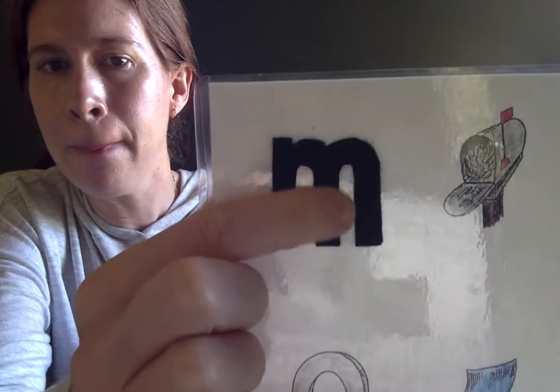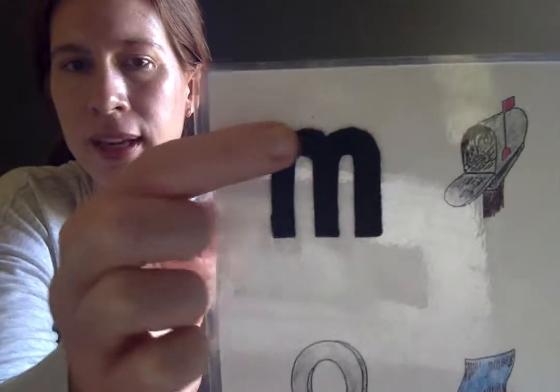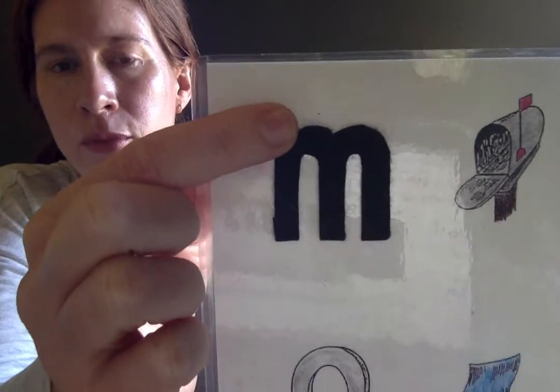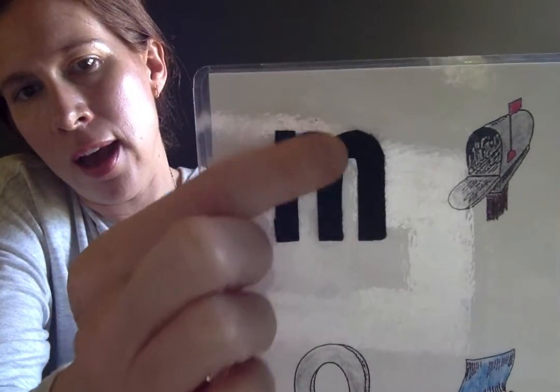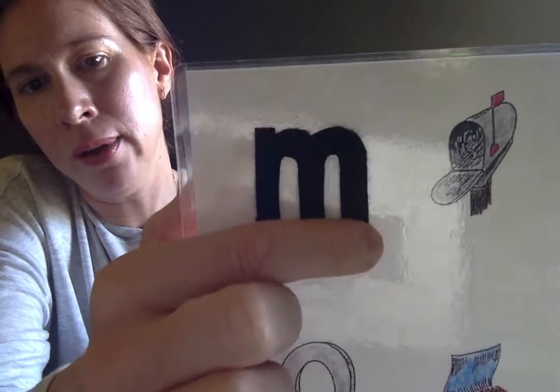Mmm. Ooh, it's a tricky one. When I'm drawing it I say like this. Straight line down, then a hump, and a hump. Alright.